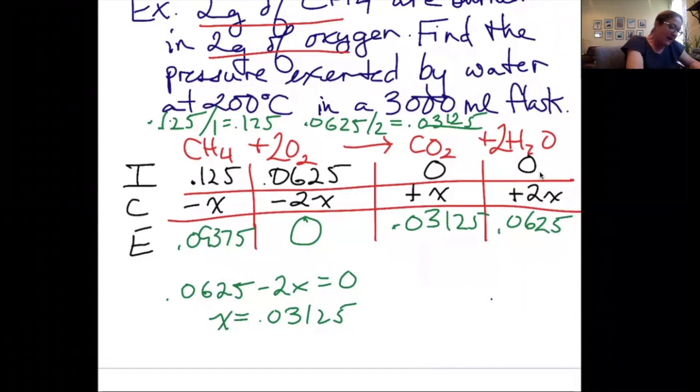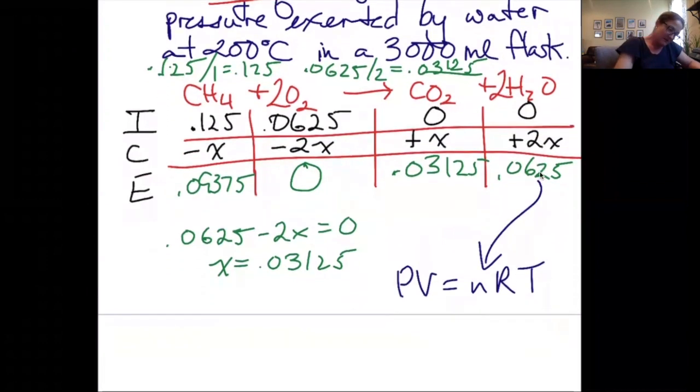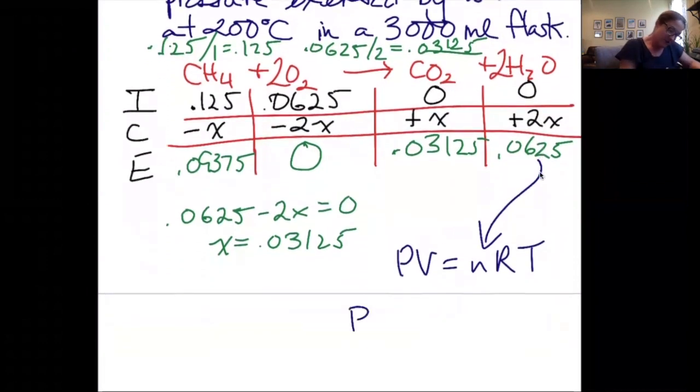Now that I know the moles of H2O that are produced, I can plug that into PV equals nRT to find the pressure exerted by that water. I'm solving for pressure. We're told it's a 3,000 milliliter flask, which is 3 liters.